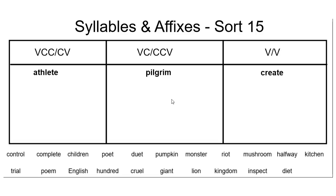Moving over to our next anchor word, we have the word pilgrim. With the word pilgrim, I notice that the word breaks right in between the L and the G — pilgrim. With this spelling pattern, we have a vowel, consonant, syllable juncture — which is right where the syllable breaks — consonant, consonant, vowel. That's why it goes in this category.